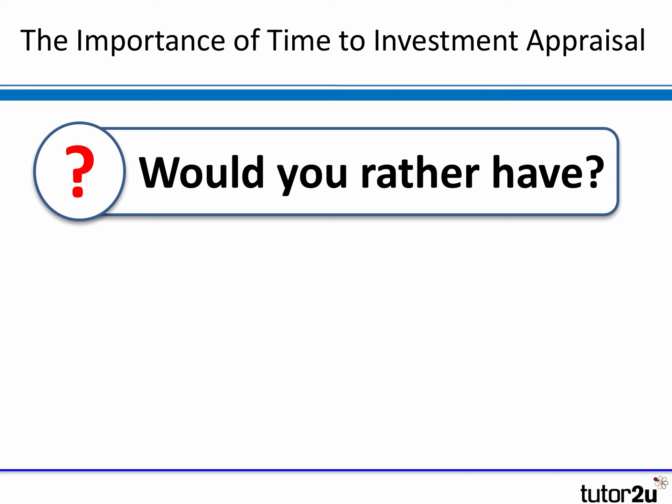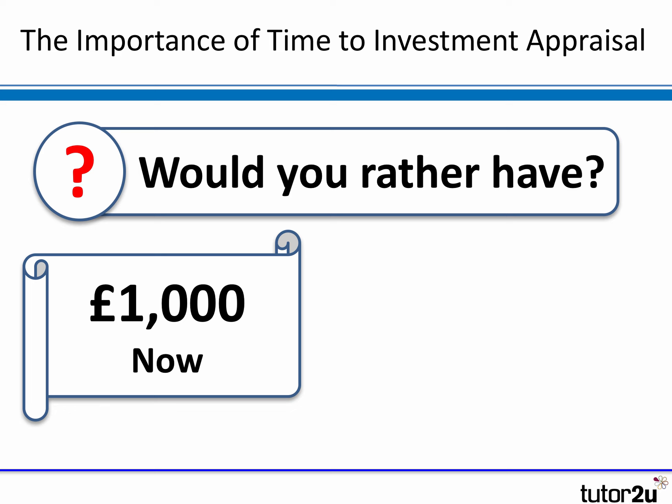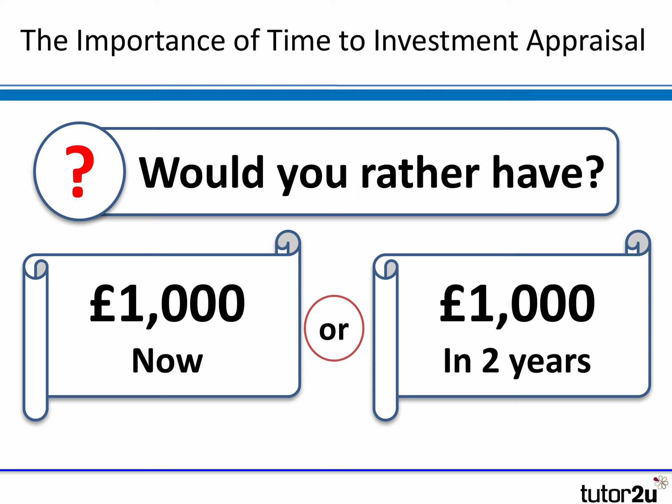The answer lies in the concept called the time value of money. Consider this question: would you rather have a thousand pounds now in cash, or a thousand pounds in two years time? You'd be better off having a thousand pounds now — partly because you may not trust that promise, but secondly because there will be things you could do with that money now that might earn a return. There's an opportunity cost associated with waiting two years. Cash flows now are worth more than those further on in time.